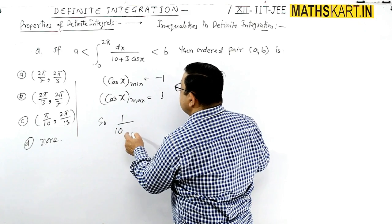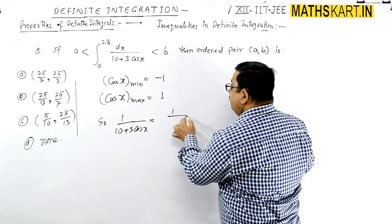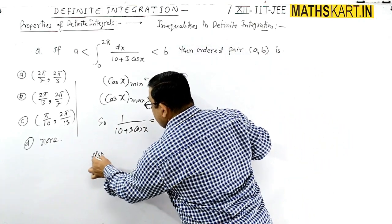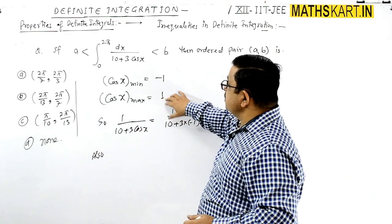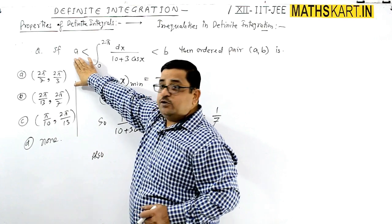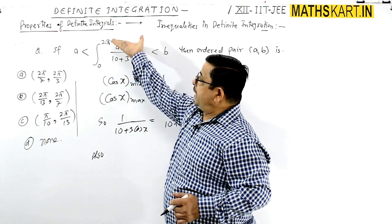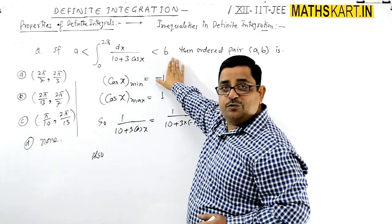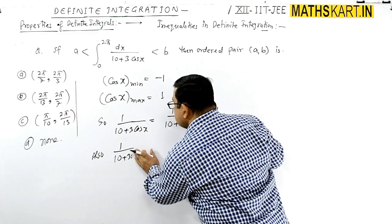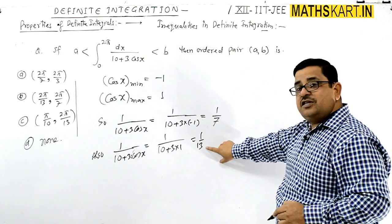So 1 upon (10 plus 3 cos x), where 3 cos x equals 2. First we will put the minimum value. Just as we put minimum value: 10 plus 3 into minus 1, it will give 1 by 7. And for the maximum value place, because this is in the denominator, when you place the minimum value, just as the value is small, the result will be bigger — in the division, the result will be greater. So we will be getting the value B to this side. So 1 by 7. And this is 10 plus 3 cos x.